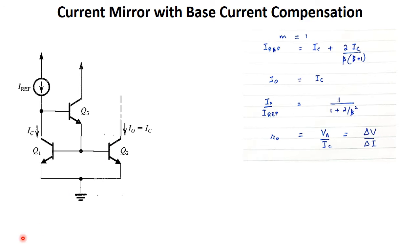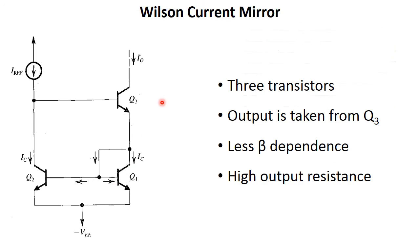In order to overcome both problems simultaneously, we use the Wilson current mirror. In the Wilson current mirror, the output current is less dependent on β and the output resistance is high. The output is taken from the Q3 transistor, and we use three transistors Q1, Q2, and Q3. Let's look at how these improvements are achieved.